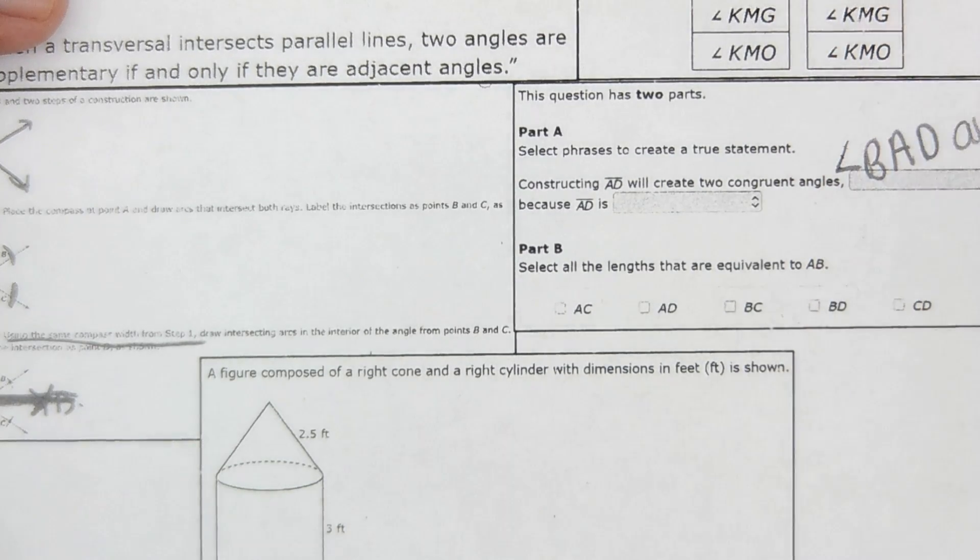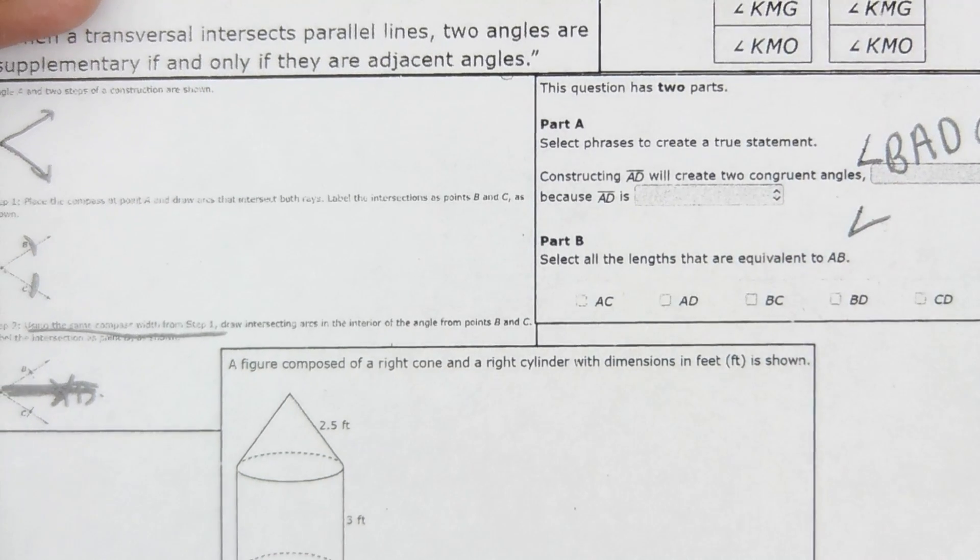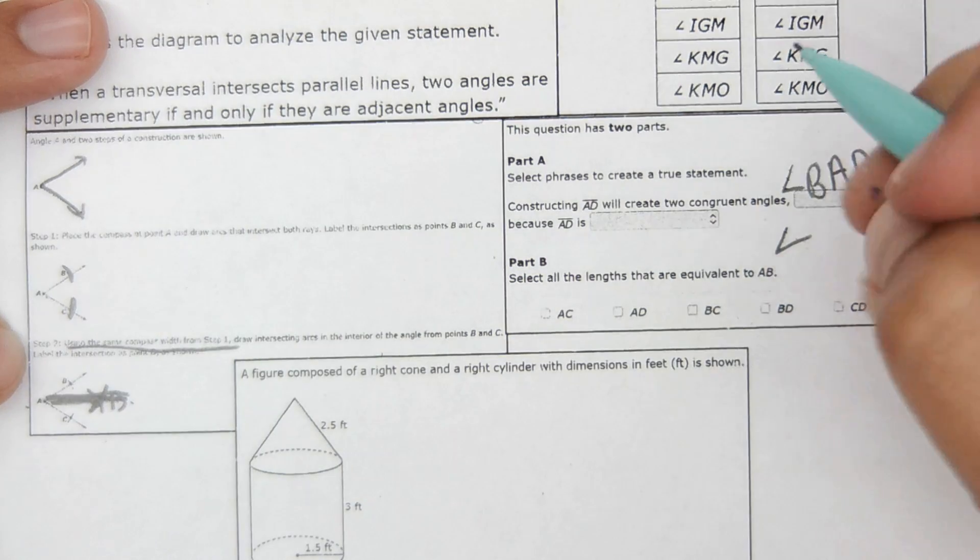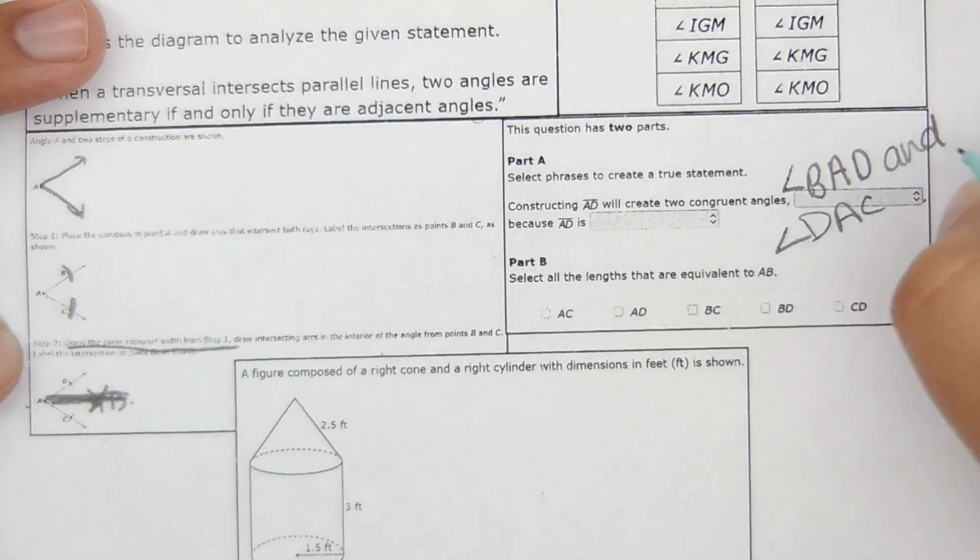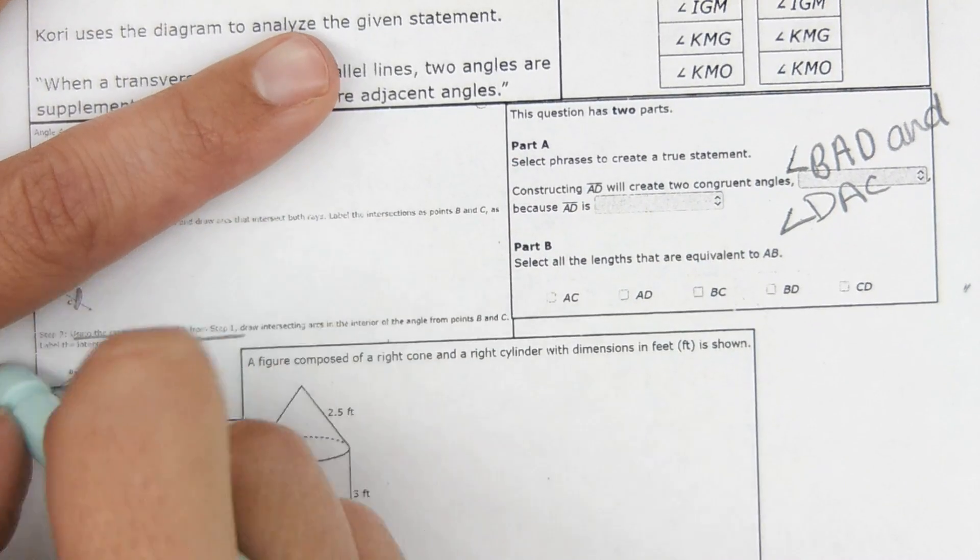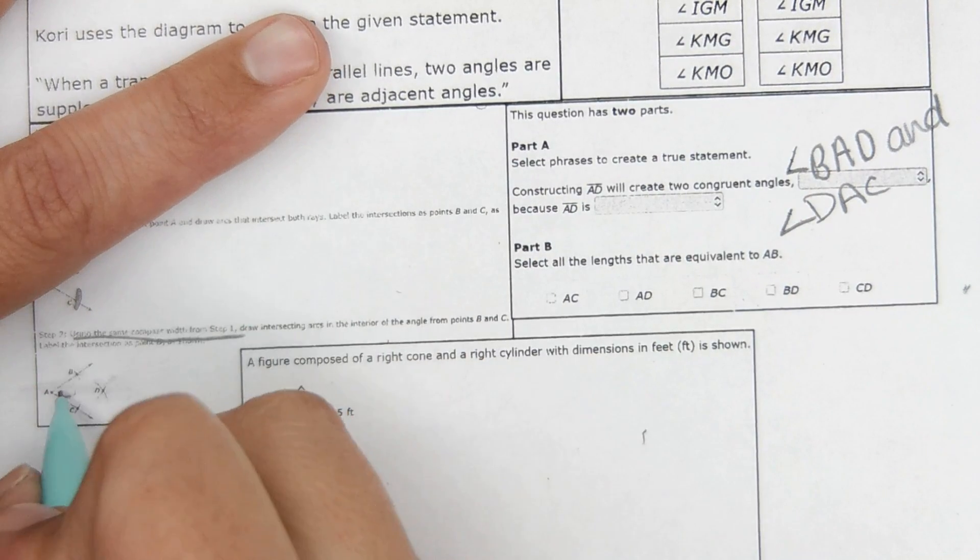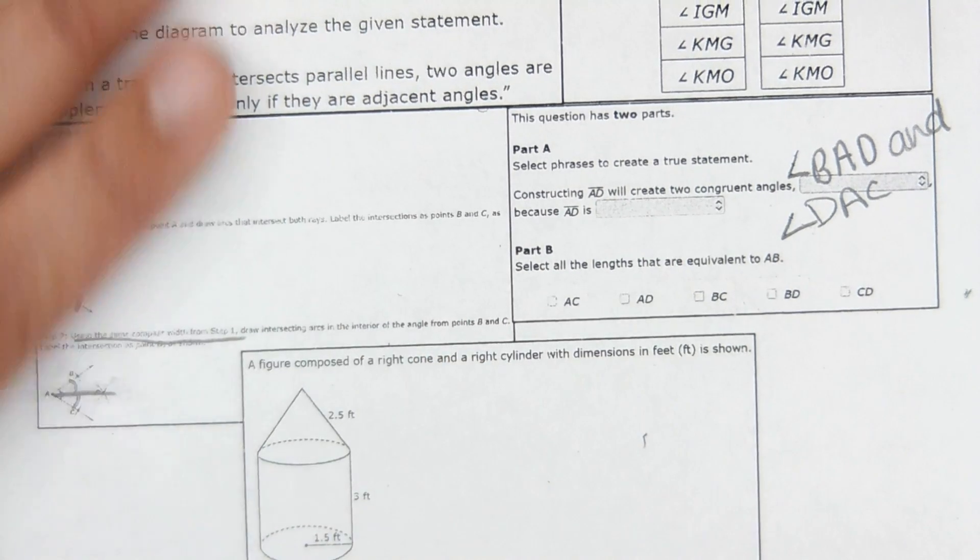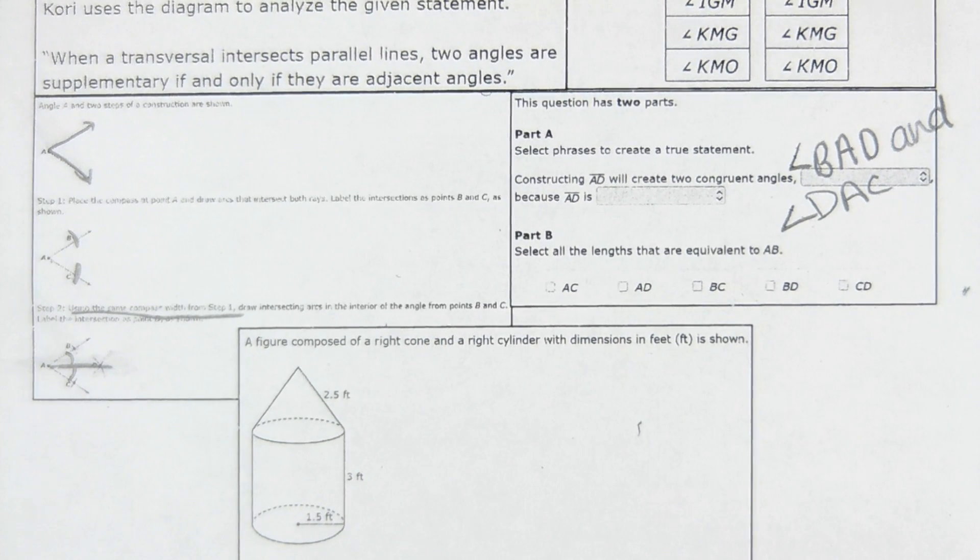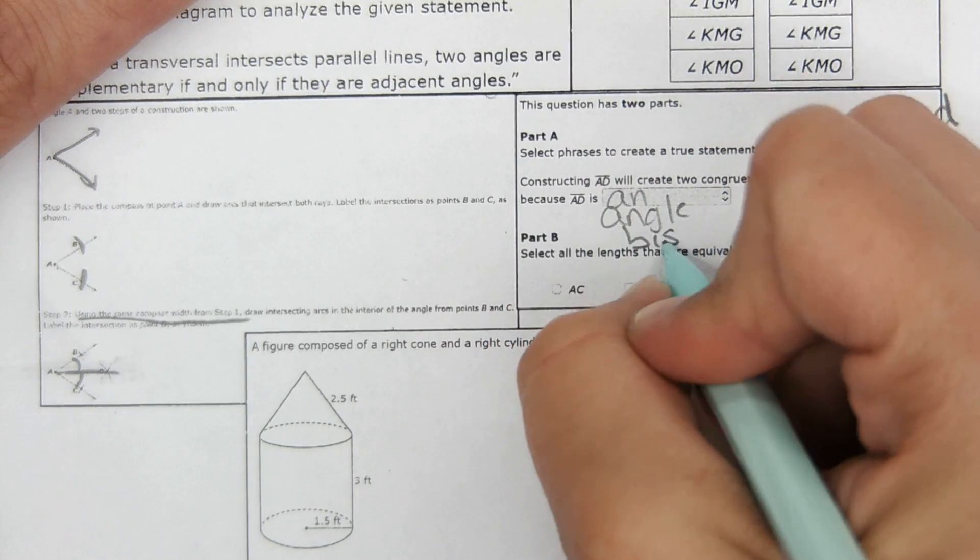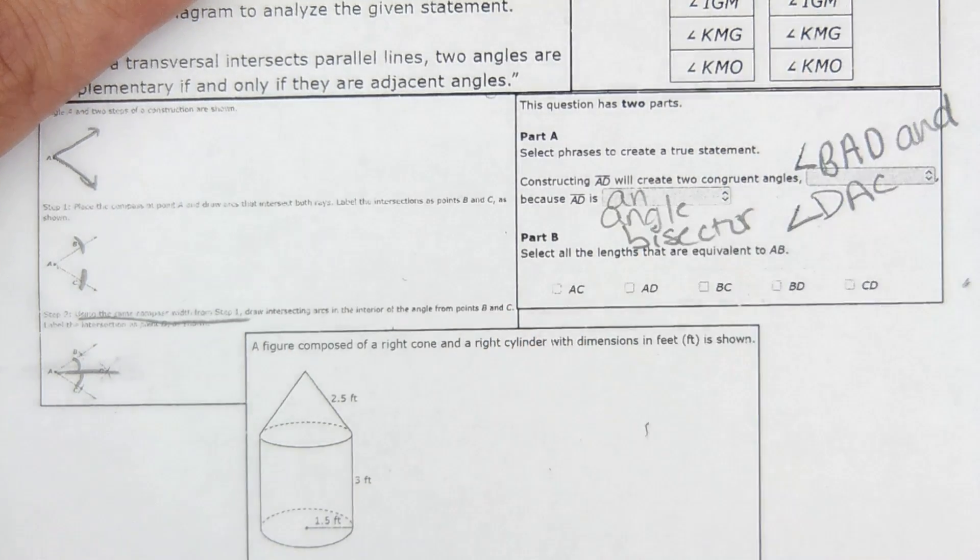And angle D, A, C. I'm going to zoom out a little bit because I can't see the whole thing. And there would be a dropdown and you just go through those choices and you determine which ones it is. So with an angle bisector, it's bisecting that angle into two equal pieces. So this side of the angle will be the same as this. And then because AD is an angle bisector, that's what it's looking for there.